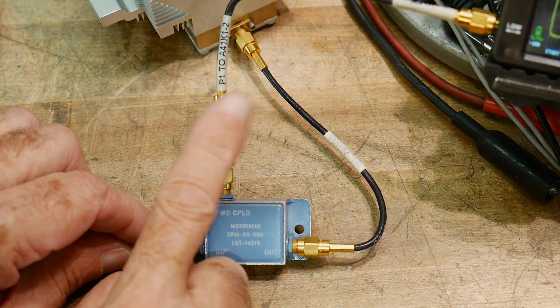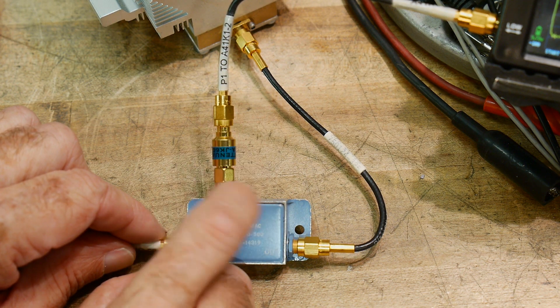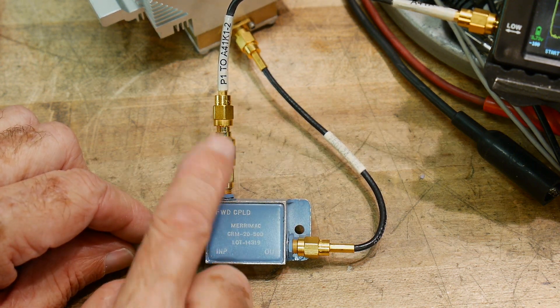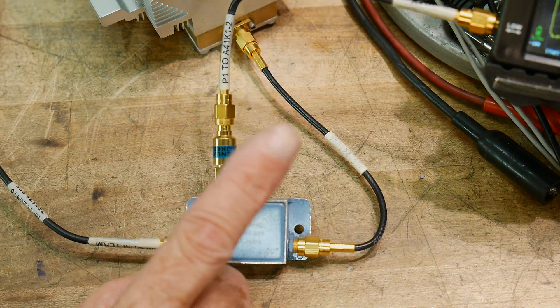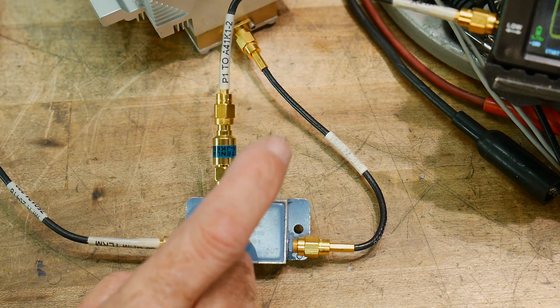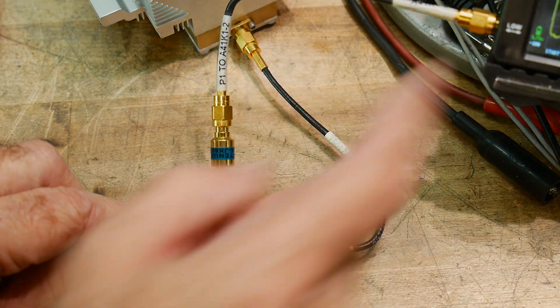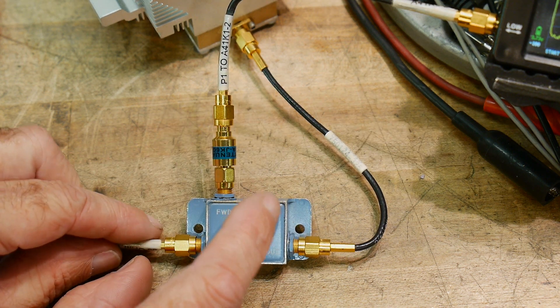So we're still going to have a possibility of 26.5 dB plus 26.5 coming out. I'm not sure, 23.5. I've got to do my math right. Plus 23.5 still coming out here. Now that would be enough to blow up your spectrum analyzer. So we need to attenuate it even more.